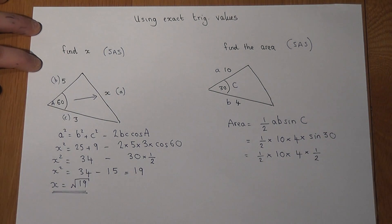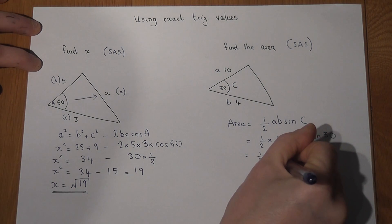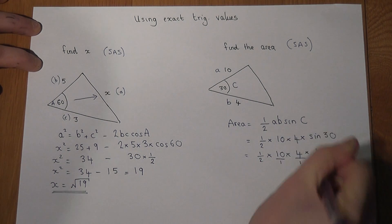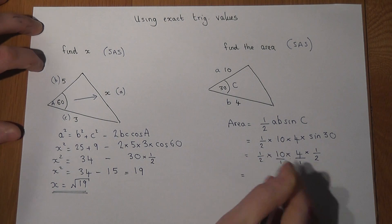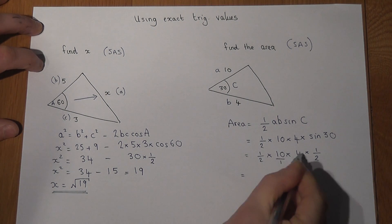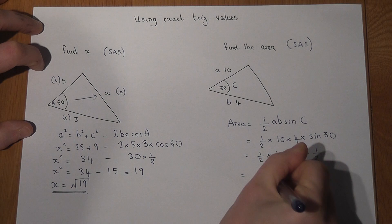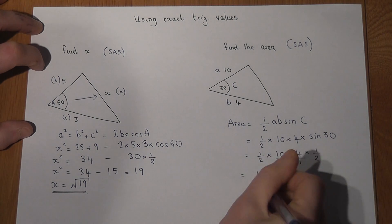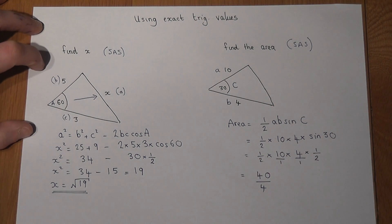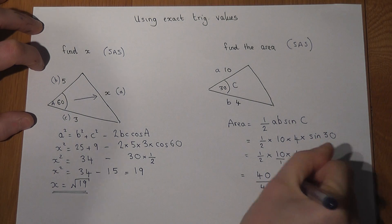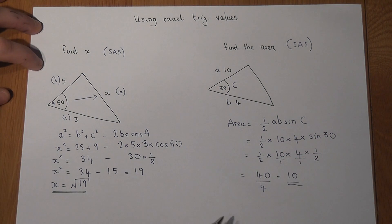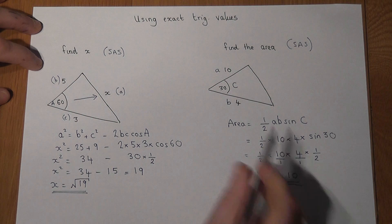And to evaluate this - a half times 10 times 4 times a half - I personally write down the integers as over 1. That's easier. Then I times the tops: 1 times 10 times 4 times 1 is 40; 2 times 1 times 1 times 2 is 4. And 40 divided by 4 is 10. The area is 10 units squared of that triangle.